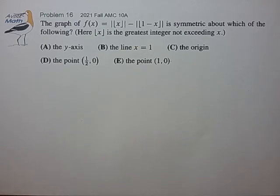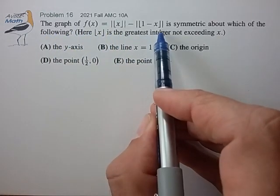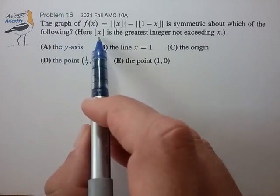Hi, this is problem 16 from the 2021 AMC 10a. The graph of f(x) equals this mess is symmetric about which of the following, where this denotes the floor function of x.